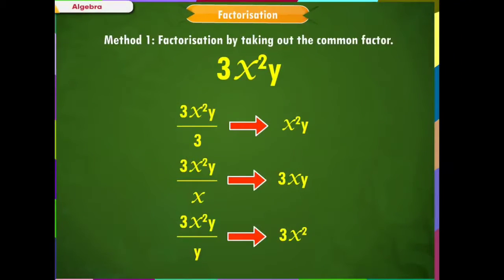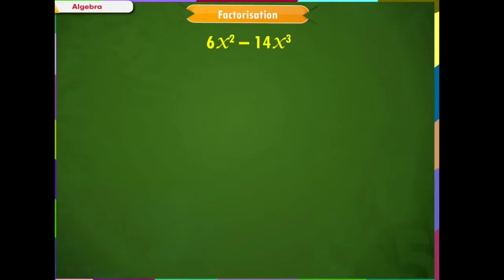Now, let us understand how to factorize a given algebraic expression by taking out common factors. Example: 6x² minus 14x³. This expression has two terms, 6x² and 14x³.